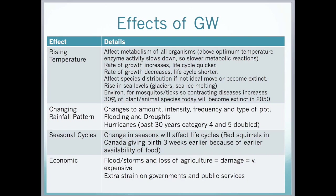Another effect of global warming is changing rainfall patterns — changes to the amount, intensity, frequency, and type of precipitation can cause flooding or droughts. We have also seen an increase in category four and five hurricanes; in the past 30 years those two categories have doubled compared to previous years. Seasonal cycles can also be affected — for example, red squirrels in Canada are giving birth three weeks earlier because of earlier availability of food. The final effect is economic: flooding and storms can cause loss of agriculture, leading to food shortages, and it becomes very expensive to rebuild, affecting government funding and public services.